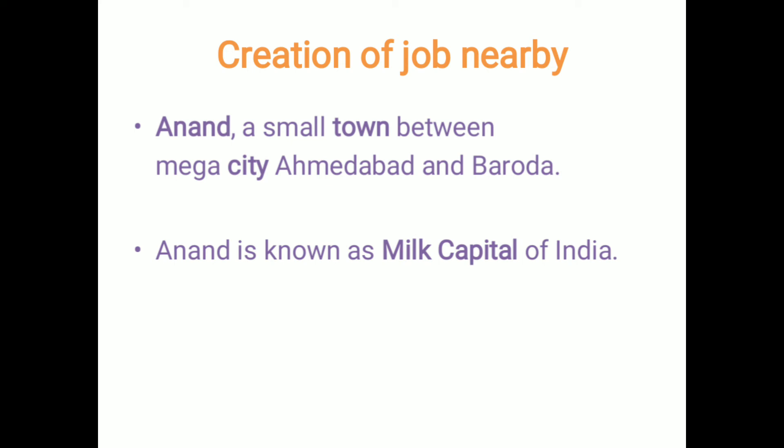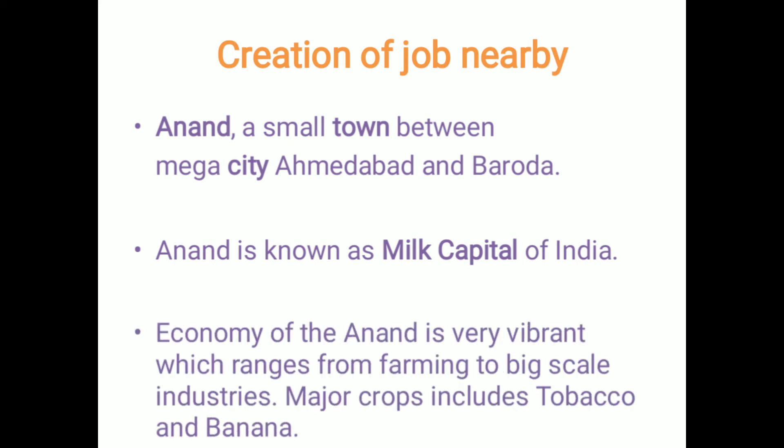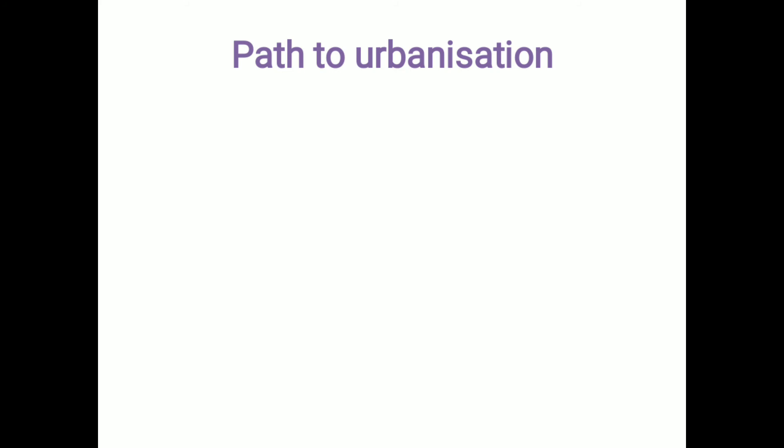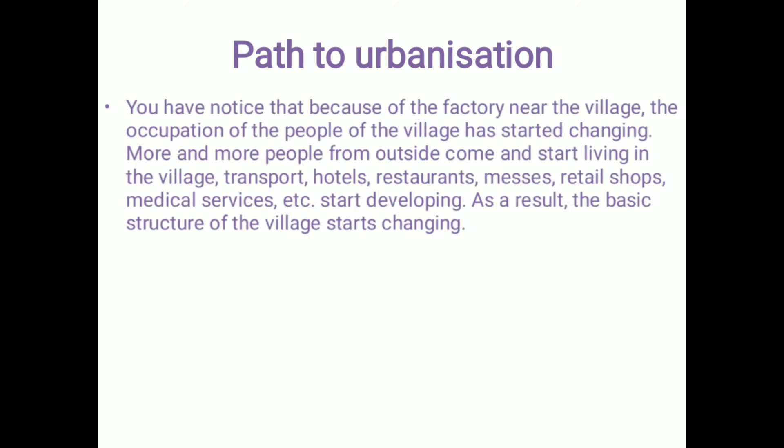Anand is also known as the milk capital of India. The economy of Anand is very vibrant, ranging from farming to large-scale industries. Major crops include tobacco and banana. It is a path to urbanization — because of the factory near the village, the occupation of people started changing and more people from outside came and started living in the village. Transport, hotels, restaurants, messes, retail shops, and medical services started developing due to this factory. As a result the basic structure of the village started changing and it turned into a town.